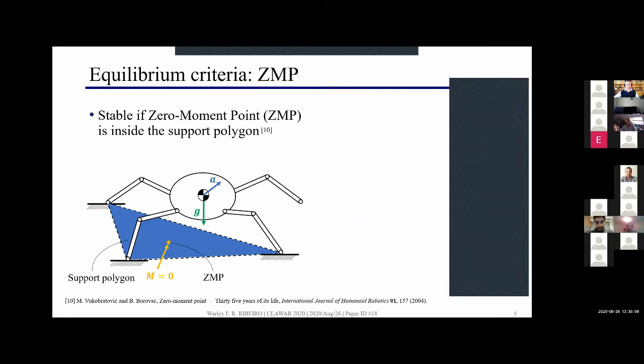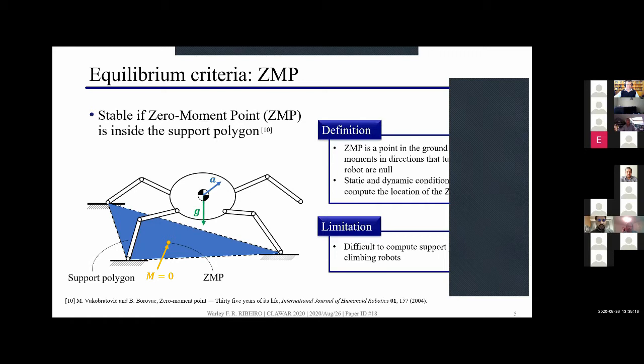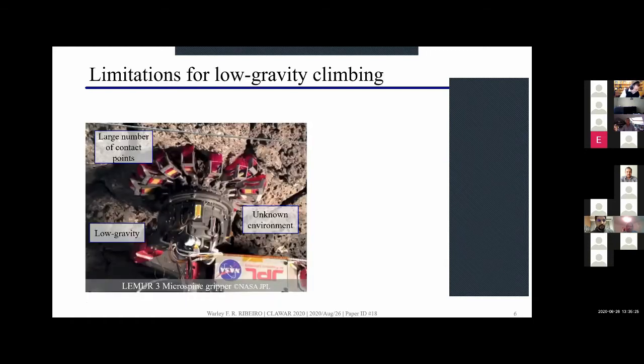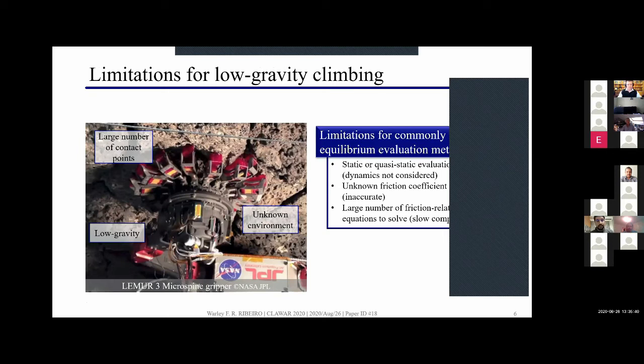We also have the zero-moment point which got very popular in the field of humanoid robotics because it considered the dynamics, but we still have the limitations that we need to compute the support polygon to use the ZMP approach. Here we consider a scenario of climbing in a lunar cave using spine type grippers with the following conditions that require better equilibrium evaluation: the low gravity makes the dynamics effects more relevant, the unknown environment limits our knowledge of the friction conditions, and also the large number of contact points increases the number of equations we need to solve.